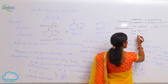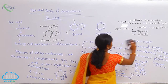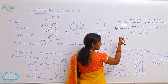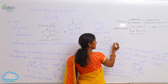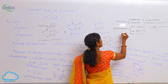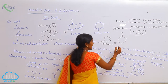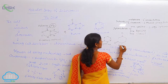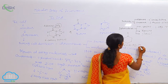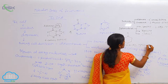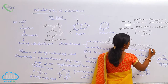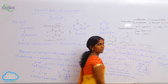And coming to uracil — the basic skeleton is common and at the second position the oxygen is present. Additionally, at the sixth position also the oxygen is present. It means it is indicated as 2,6-dioxypyrimidine. That is nothing but uracil.